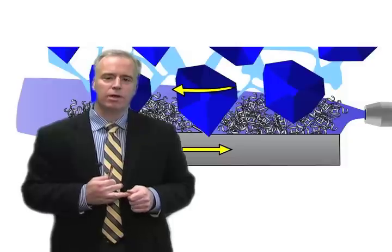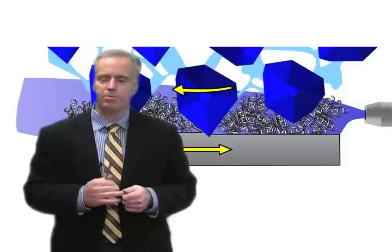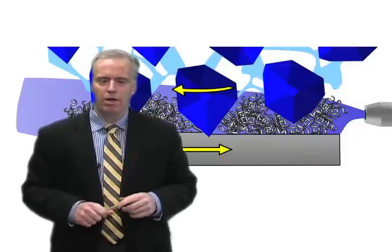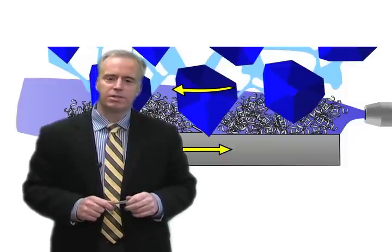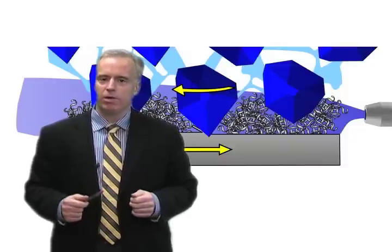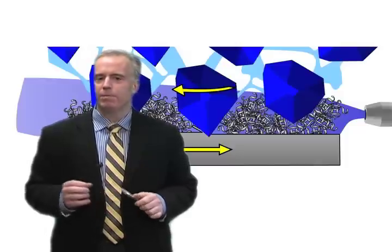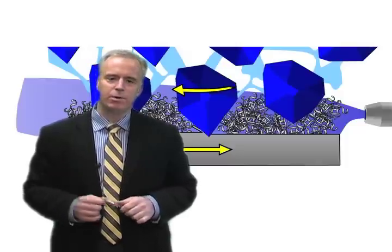Reason number two has to do with chemical reactions between the grit and the workpiece. The main reason that stainless steel is so nasty to grind in terms of loading is because stainless steel forms a chromium oxide layer, Cr2O3.